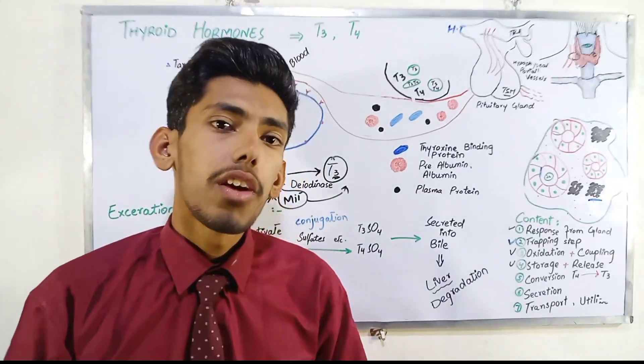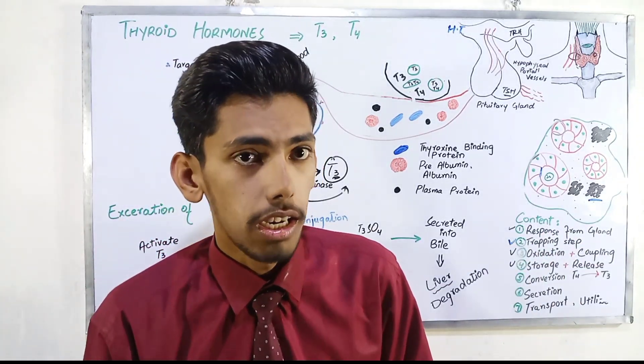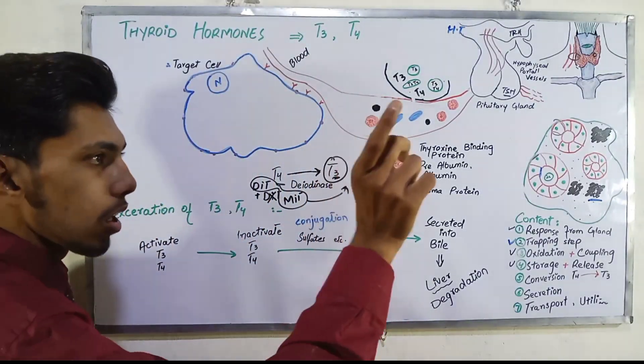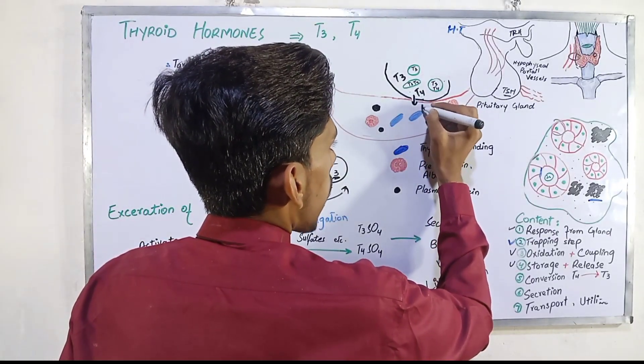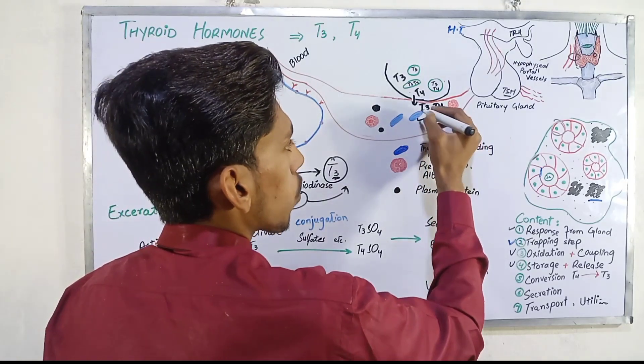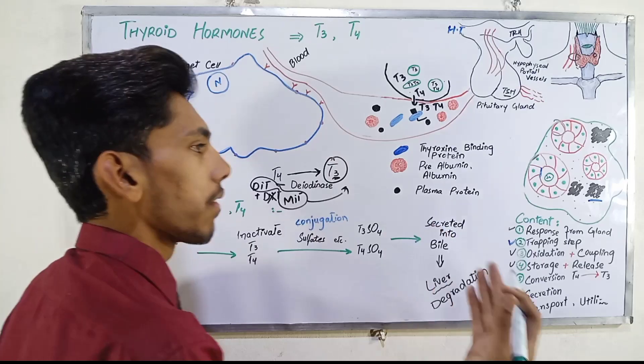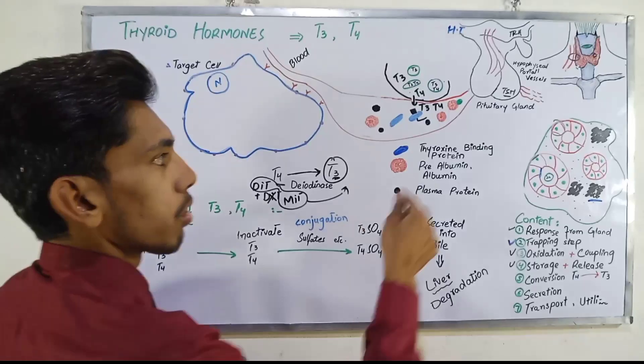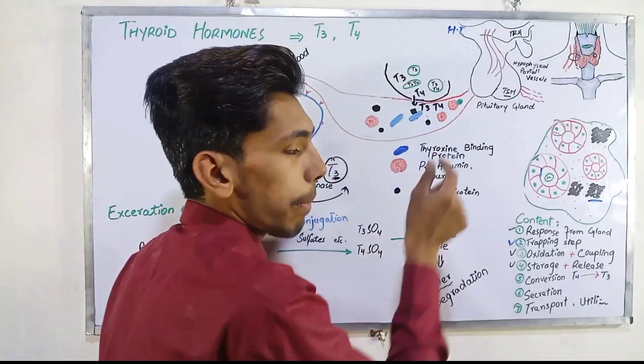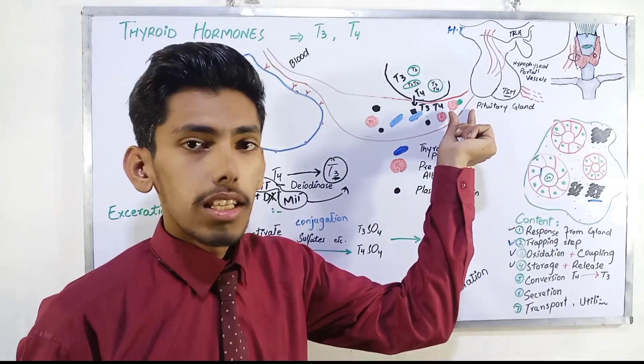From follicle cells to blood vessels you have different plasma proteins, especially thyroxine binding protein. T3 and T4 enter blood vessels. T4 thyroxine binds to thyroxine binding protein. T3 binds to different plasma proteins like albumin protein. This is T3 binding with albumin protein and this is T4 binding with thyroxine binding protein.